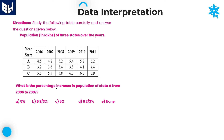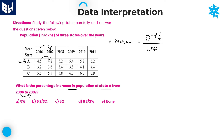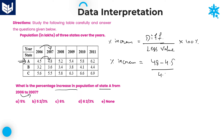The second question: what is the percentage increase in population of state A from 2006 to 2007? Here we need to calculate the percentage increment value. Percentage increment is equal to the difference between those two values divided by the lesser value, into 100. Therefore, the required percentage increment is equal to: 4.8 minus 4.5 divided by 4.5 into 100.